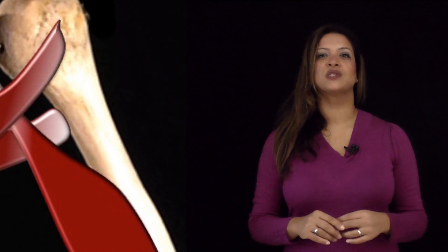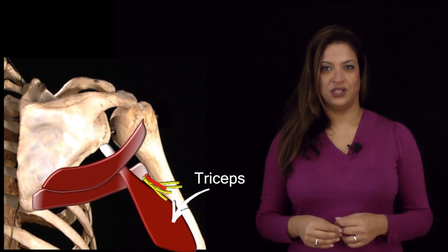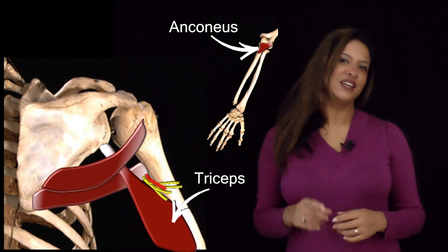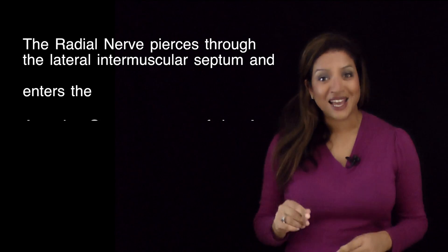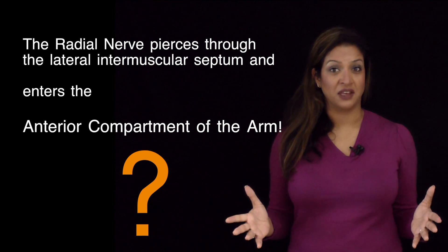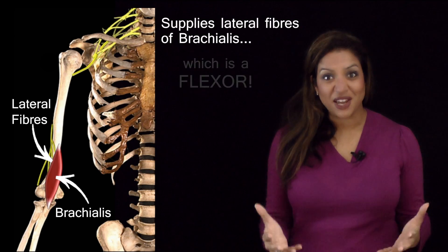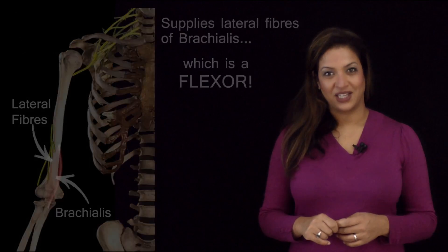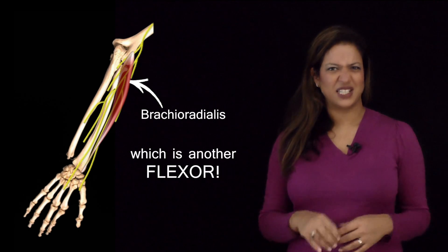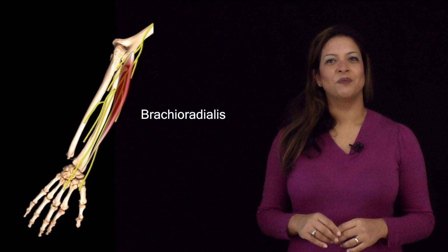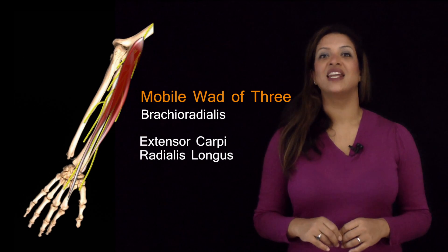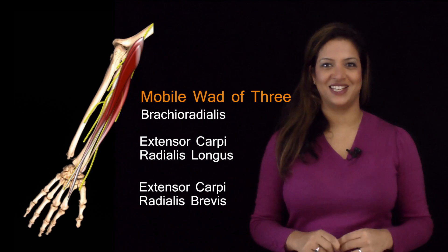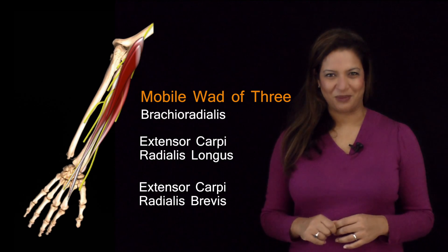Once it passes through into the posterior compartment, the radial nerve supplies the triceps muscle and also anconeus. Surprisingly, the radial nerve then pierces through the lateral intermuscular septum and enters the anterior compartment of the arm, where it supplies the lateral fibres of brachialis — a flexor of the forearm — and brachioradialis, another flexor. Brachioradialis is a member of the mobile wad of three, the other two being extensor carpi radialis longus and extensor carpi radialis brevis, which are unquestionably extensors.